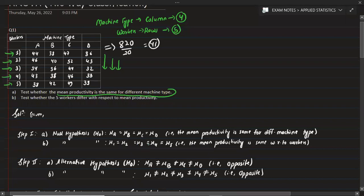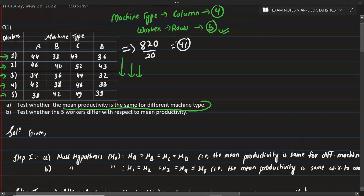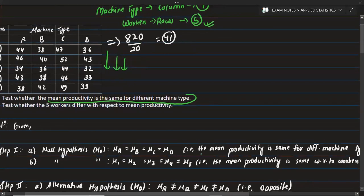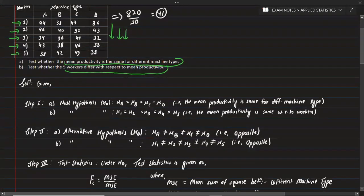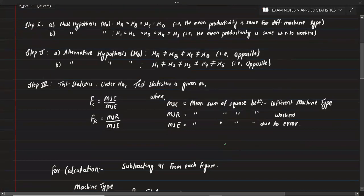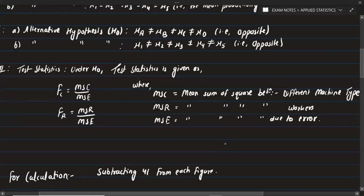For the row null hypothesis: Mu1 equals Mu2 equals Mu3 equals Mu4 equals Mu5, meaning all five workers have the same mean productivity. The alternative hypothesis is the opposite — at least one worker mean differs. We then write the F calculated values: F_c for columns and F_r for rows, with formulas MSC upon MSE and MSR upon MSE.